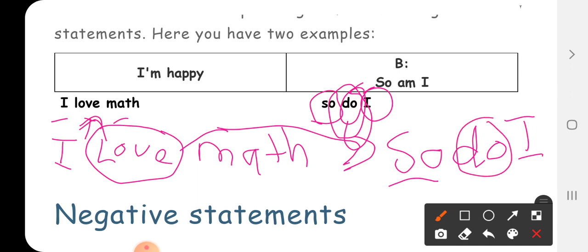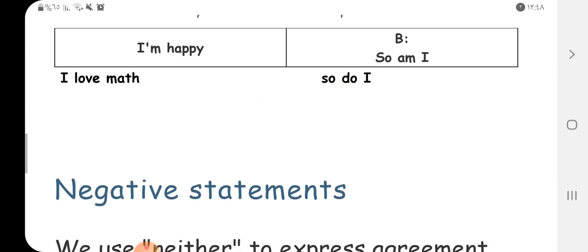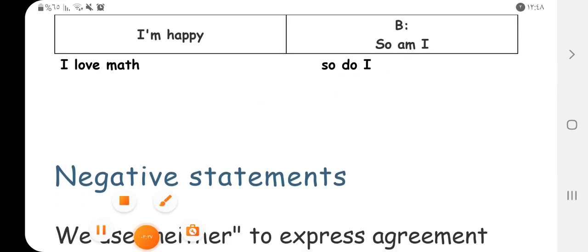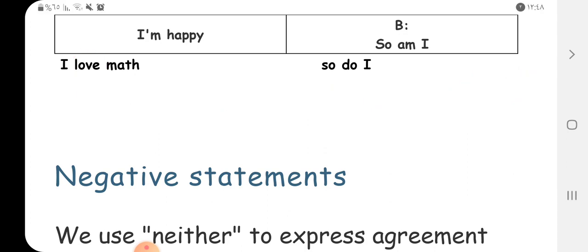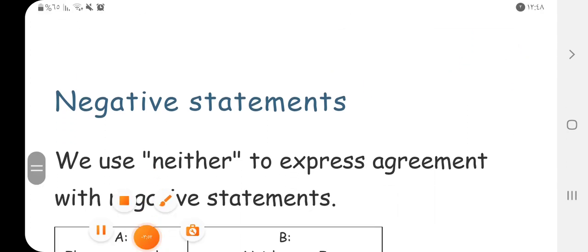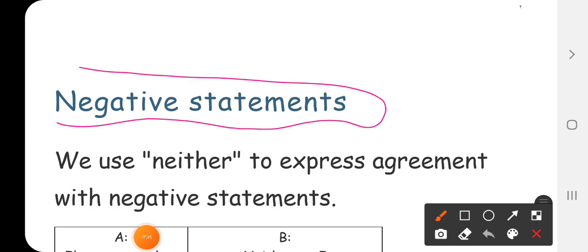Just put it so, instead of the verb we put it do then I. Okay, so this is, so do I. Now, for the agreement, if you have positive statements we put it so then do, then I. Okay?